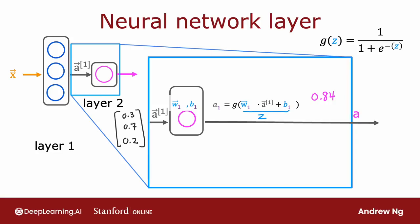If this results in a number say 0.84, then that becomes the output of the output layer of the neural network. Because the output layer has just a single neuron, this output is a scalar — a single number rather than a vector. Sticking with our notational convention, we use a superscript in square brackets two to denote quantities associated with layer two, so a^[2] is the output of this layer and the final output of the neural network.